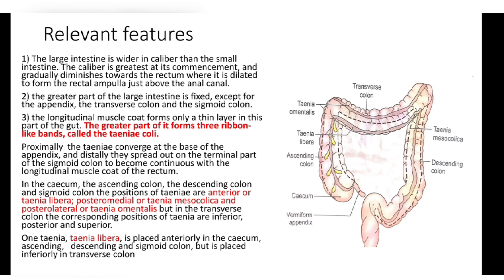The large intestine is wider in caliber than the small intestine, greatest at its commencement and gradually diminishing towards the rectum, where it is dilated to form the rectal ampulla. The greater part is fixed except for the appendix, transverse colon, and sigmoid colon. The longitudinal muscle coat forms only a thin layer, with the greater part forming three ribbon-like bands called taeniae coli. The taeniae converge proximally at the base of the appendix and spread out distally to become continuous with the longitudinal muscle of the rectum. In the cecum, ascending, descending, and sigmoid colon, the taeniae are: anterior (taenia libera), posteromedial (taenia mesocolica), and posterolateral (taenia omentalis).